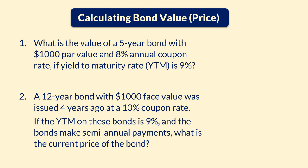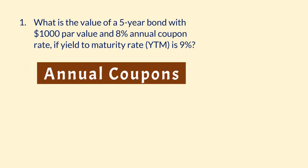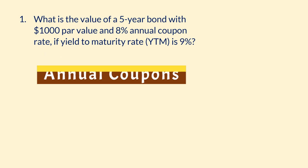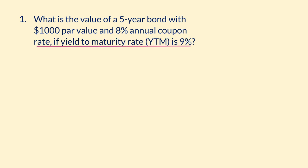In this video, I will be discussing the basic properties of a bond and calculating the value of the bonds in these two examples. Example 1: What is the value of a 5-year bond with $1,000 par value and 8% annual coupon rate if the Yield to Maturity rate is 9%?